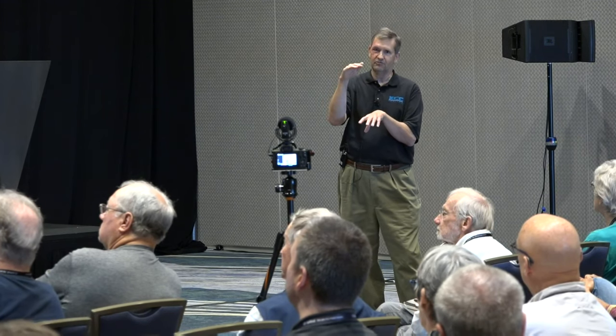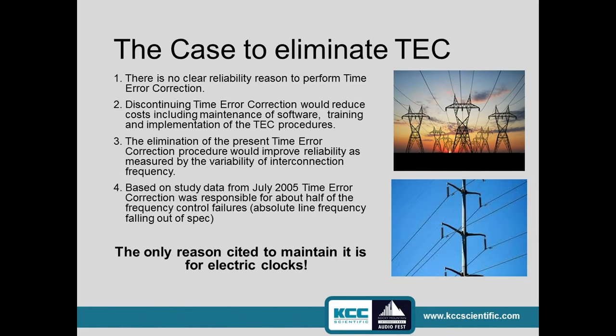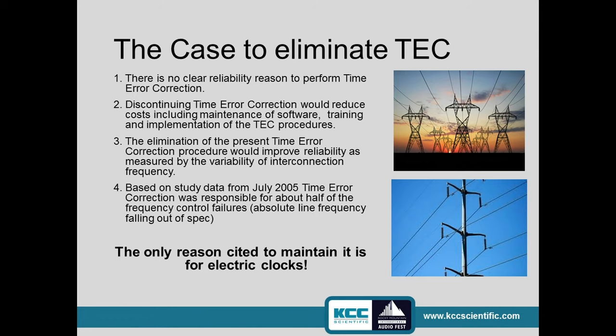Of course, getting rid of TEC would make all electric clocks lousy time keepers. So that's been stalled and pushed back, but it has been considered and we have to be aware it might actually happen. Why would you get rid of it? Because in order to make it work, generator speeds must stay within a certain range with very tight regulations — and when they go out, overreactions can lead to overcompensations and overshoots, making control harder and worse. The only reason given to maintain it is for electric clocks.